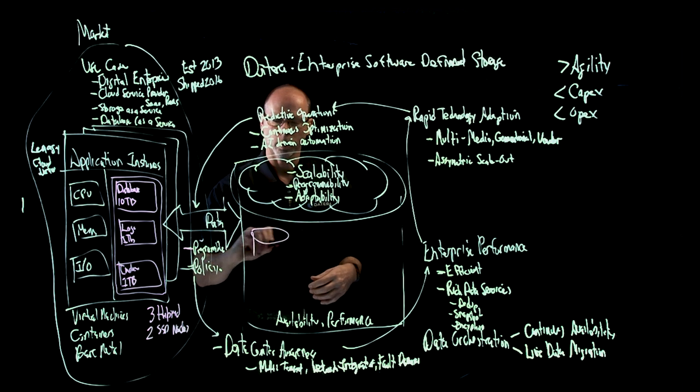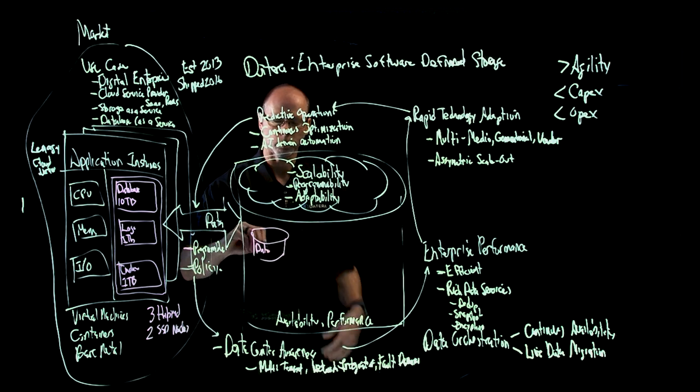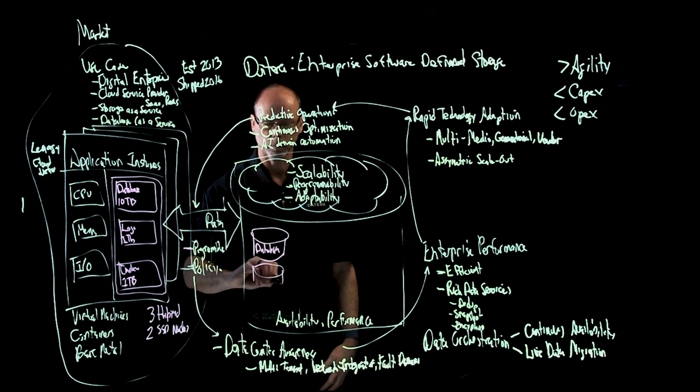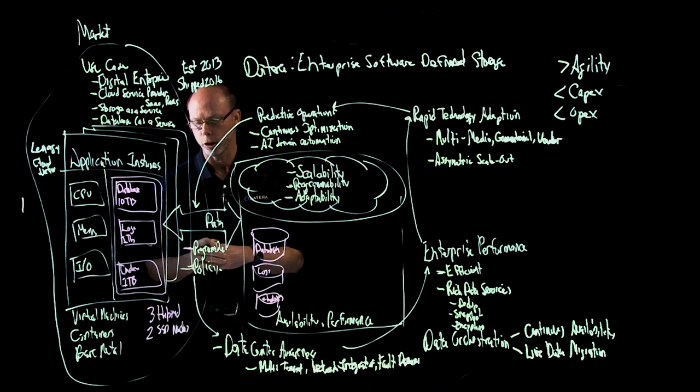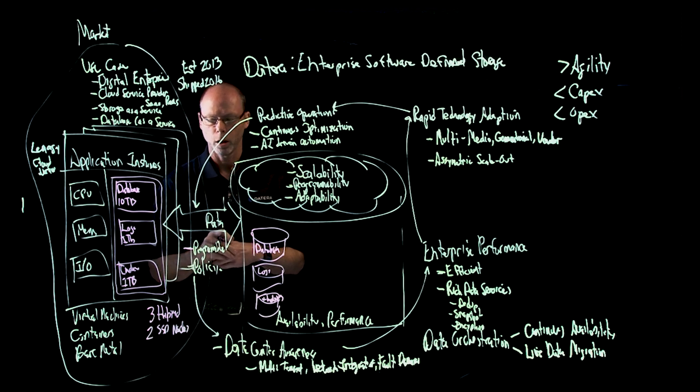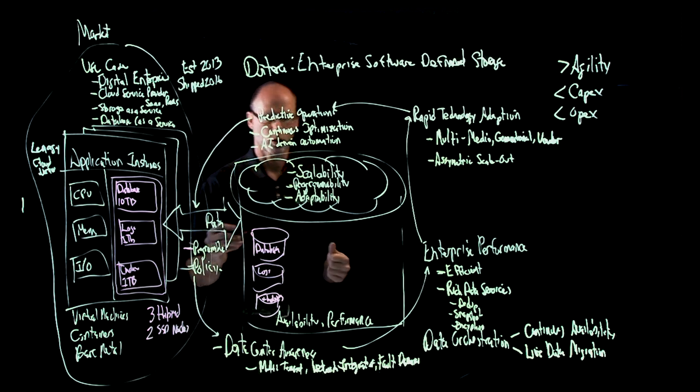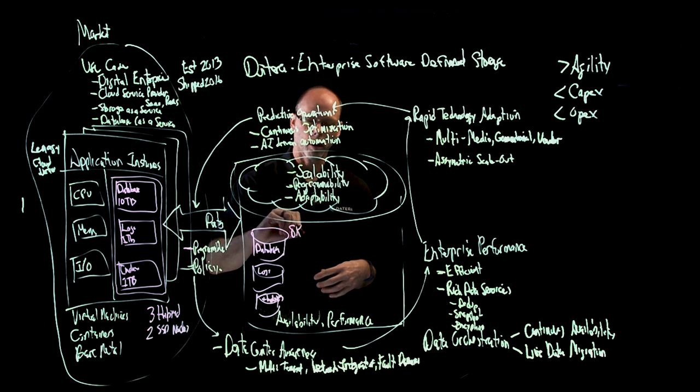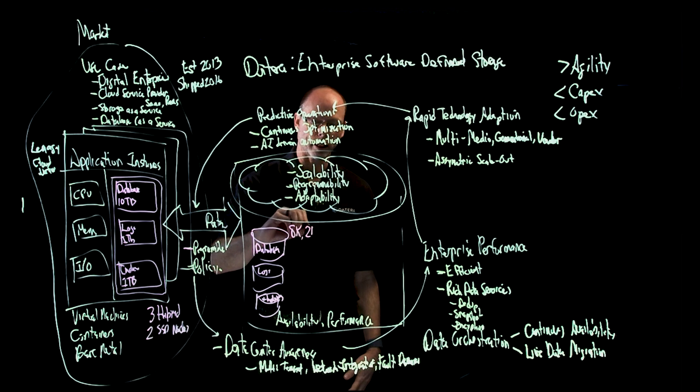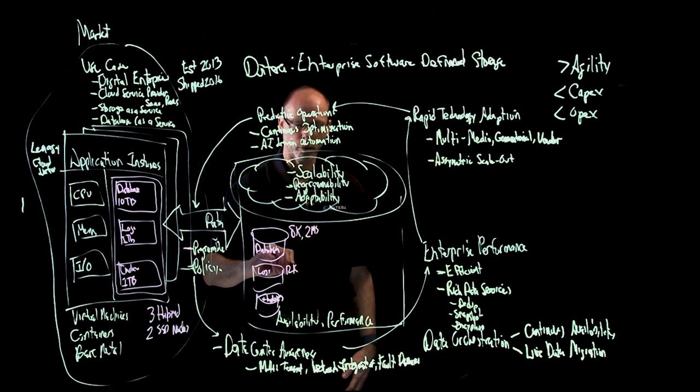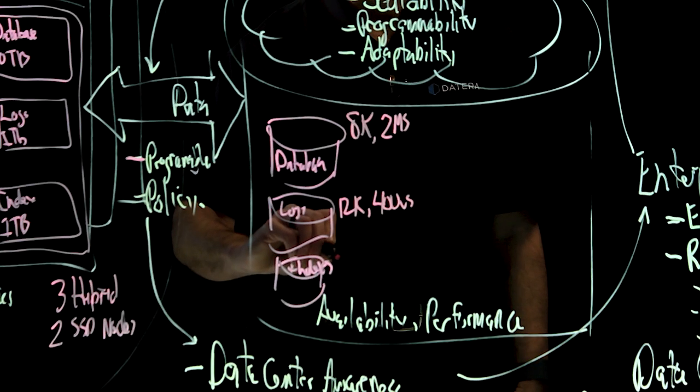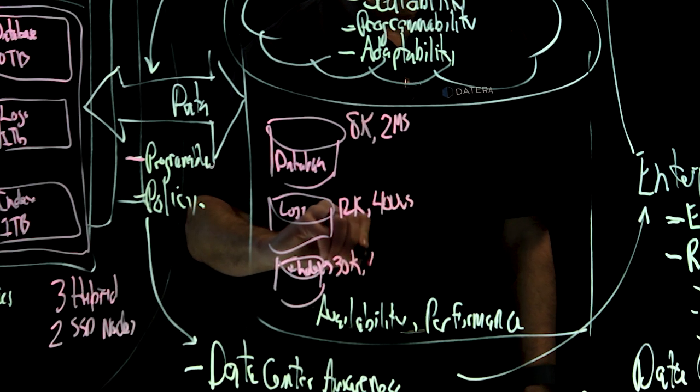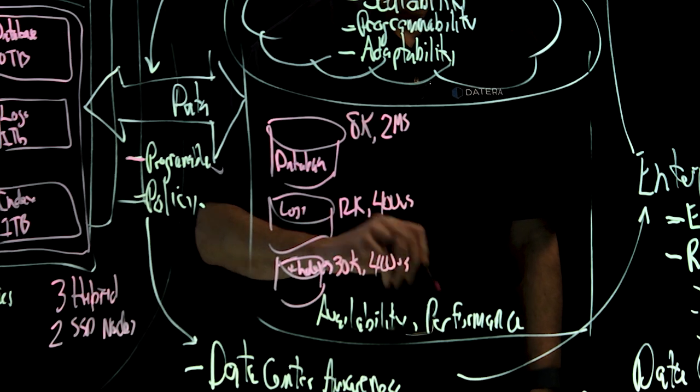So over here, I've got my database, my logs, and my indexes. And the system is up and running, providing that service to this application. Over time, the system is generating 8k IOPS to the database with a response time of two milliseconds. It's generating 12,000 IOPS to the logs with 400 microsecond response time. And it's generating 30,000 IOPS to the indexes with 400 microsecond response time.